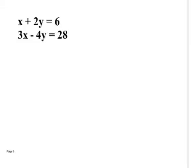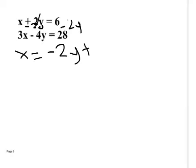On the last problem, step one was already taken care of. In this case it hasn't been, so the first thing we have to do is get a variable by itself. The easiest one is to solve for x. So I subtract 2y from both sides, which leaves me with x equals negative 2y plus 6. That is the easiest one to solve for — if you solved for y you'd have to divide everything by 2.